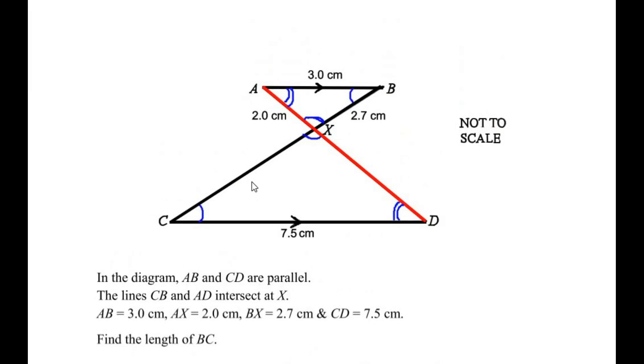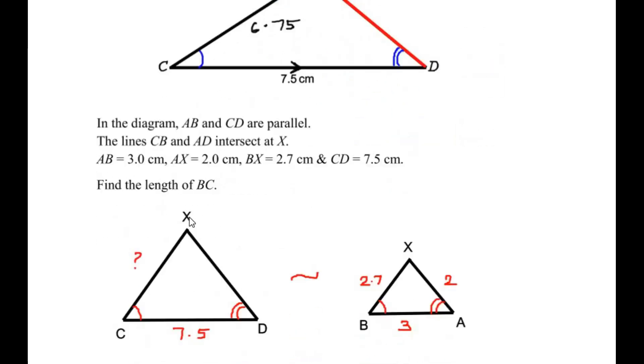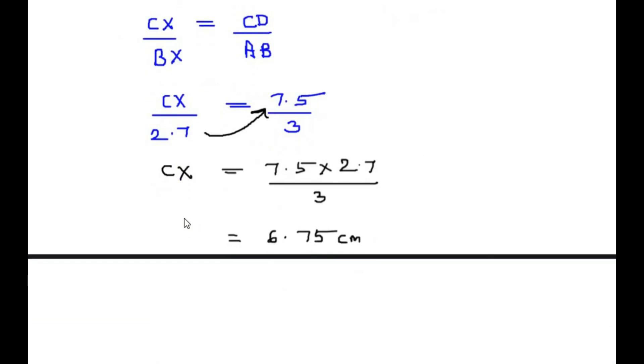Once we have found the value of CX which is 6.75, BC can be found by adding BX and CX together. BC equals BX plus CX. BX value was given as 2.7 plus CX which is 6.75. Adding these both will get a value of 9.45 centimeters. This is the length of BC.